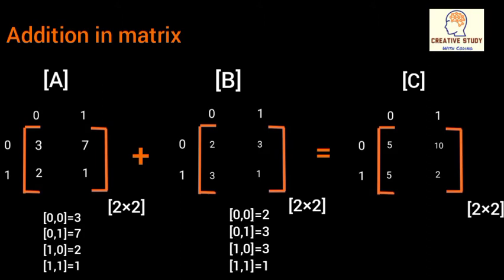And in matrix B, at index [0,0] value is 2, and at [0,1] value is 3. And at index [1,0] value is 3, and at index [1,1] value is 1.